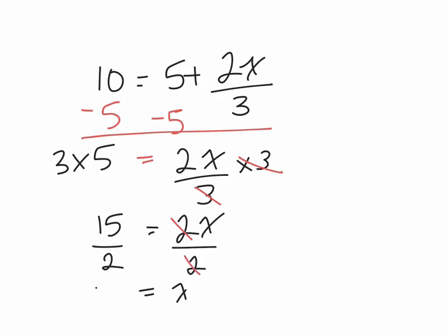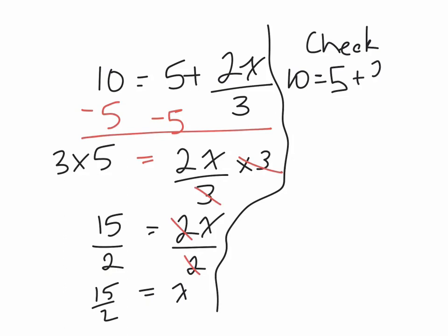You could also say it's 7.5, but I'll just leave it as 15 over 2. Again, we could do a quick check. So I'll see if I can just squeeze this in here. So let's do a quick check. 10 equals 5 plus 2, 15 over 2, over 3.